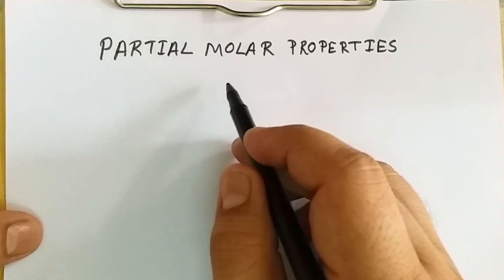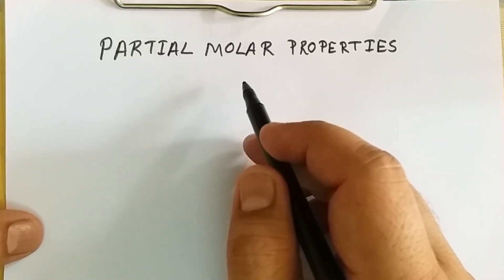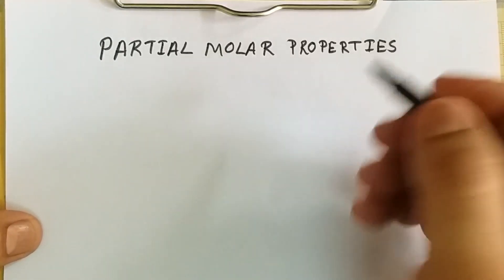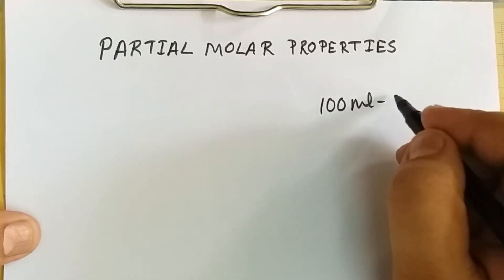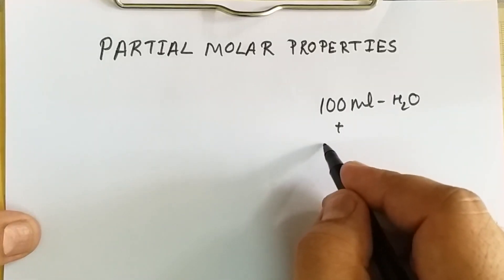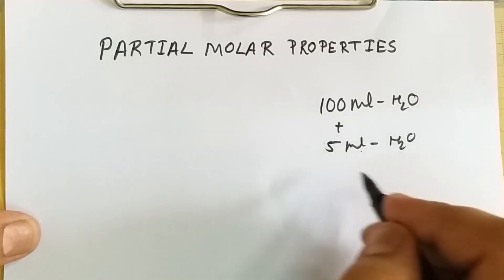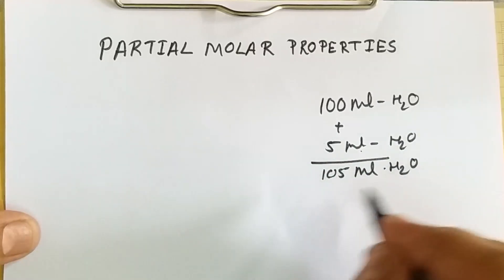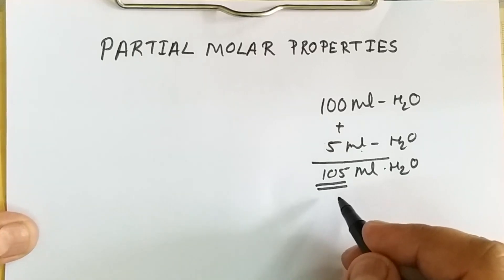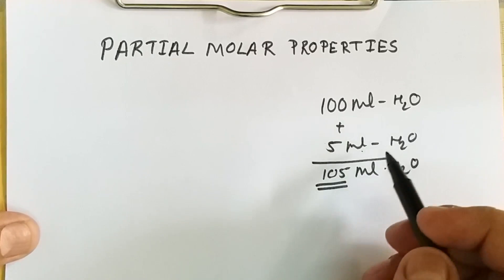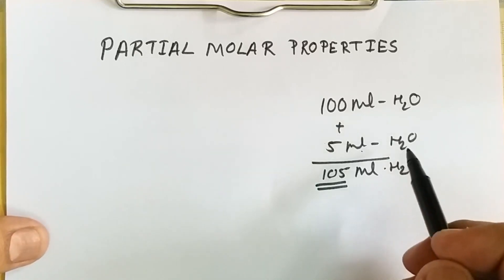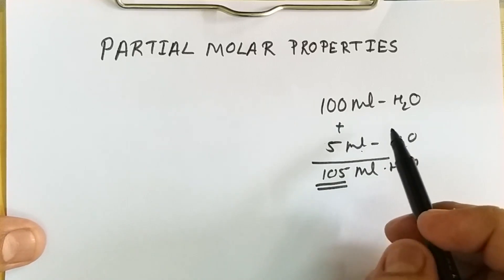Let me take one example. Suppose you have 100 ml of water in a beaker and you add 5 ml of water. The total volume will be 105 ml of water. The total volume of the system remains the same because we are adding water to water, so the net molecular interaction when we add another 5 ml of water remains the same.